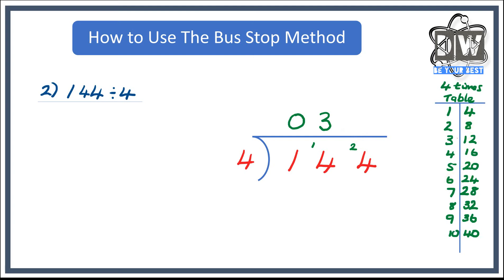And then I look and say how many fours go into 24? I look down my list, I can see six fours go into 24, so we put it in there.